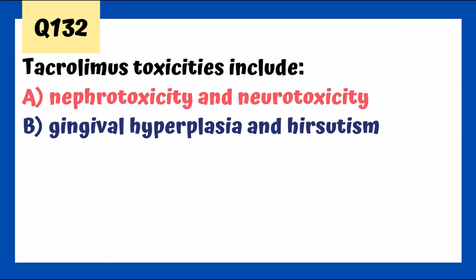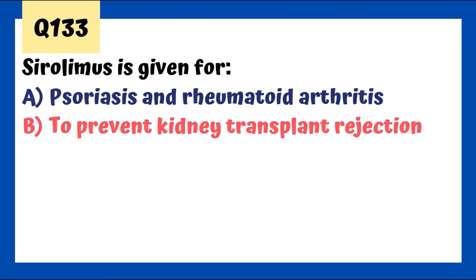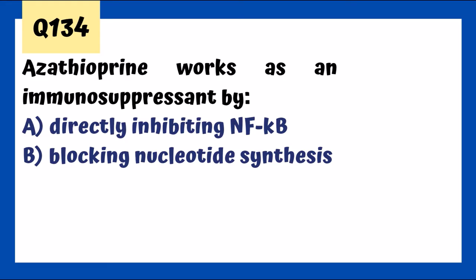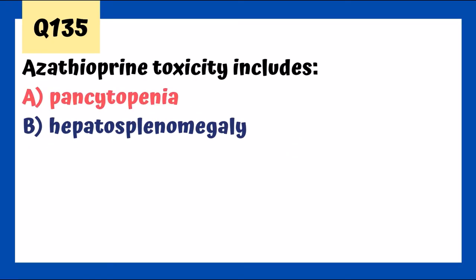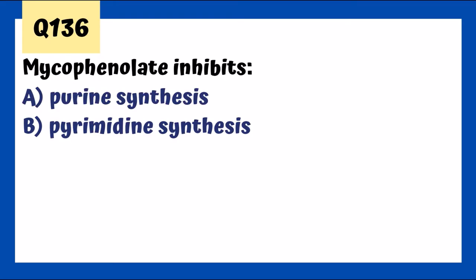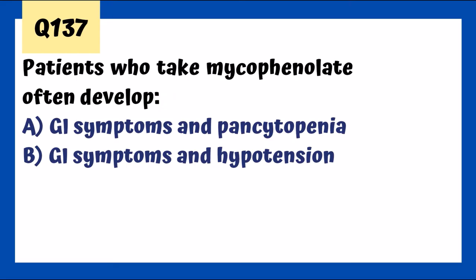Sirolimus (cerolimus) is given to prevent kidney transplant rejection and is not nephrotoxic like cyclosporin. Azathioprine blocks nucleotide synthesis — specifically purine synthesis — as an immunosuppressant. Toxicities include pancytopenia and reduced DNA synthesis. Mycophenolate also inhibits purine synthesis, and patients often develop GI symptoms and pancytopenia.